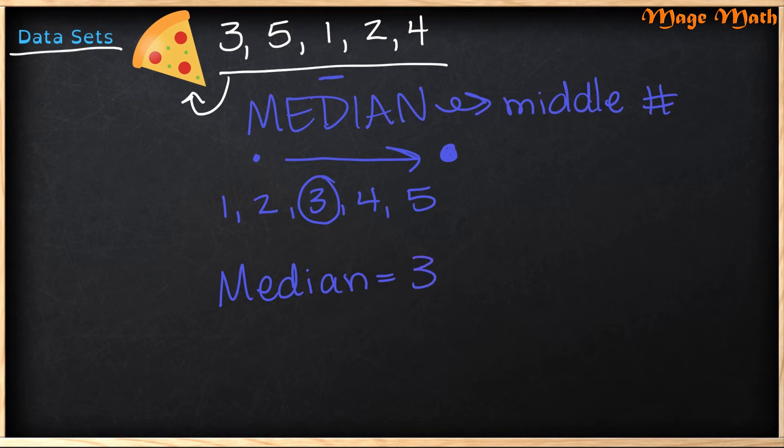What if another friend joins though, and they said that they also want one slice of pizza? Then my new data set would become one, one, two, three, four, and five. Now, if I look for the middle number, I see that I have two middle numbers. Well, for the median, you can't have two. So what you need to do is find an average, but we already know how to do that. Do you remember how?